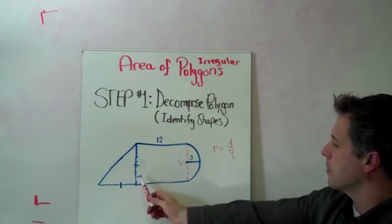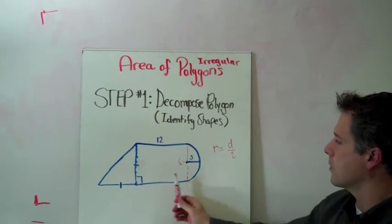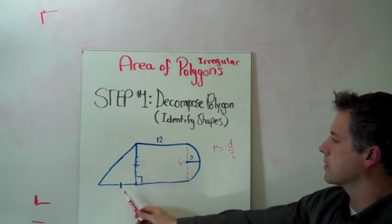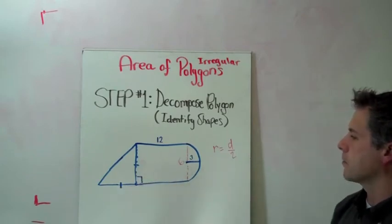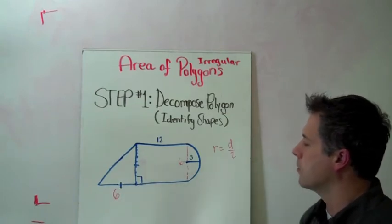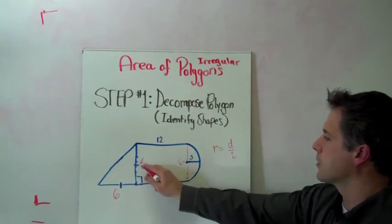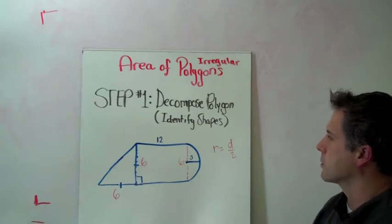And this triangle over here, we can transfer this length over here. The height of the triangle is 6, and the base is also the same. So we have a triangle with the dimensions that are 6 by 6.